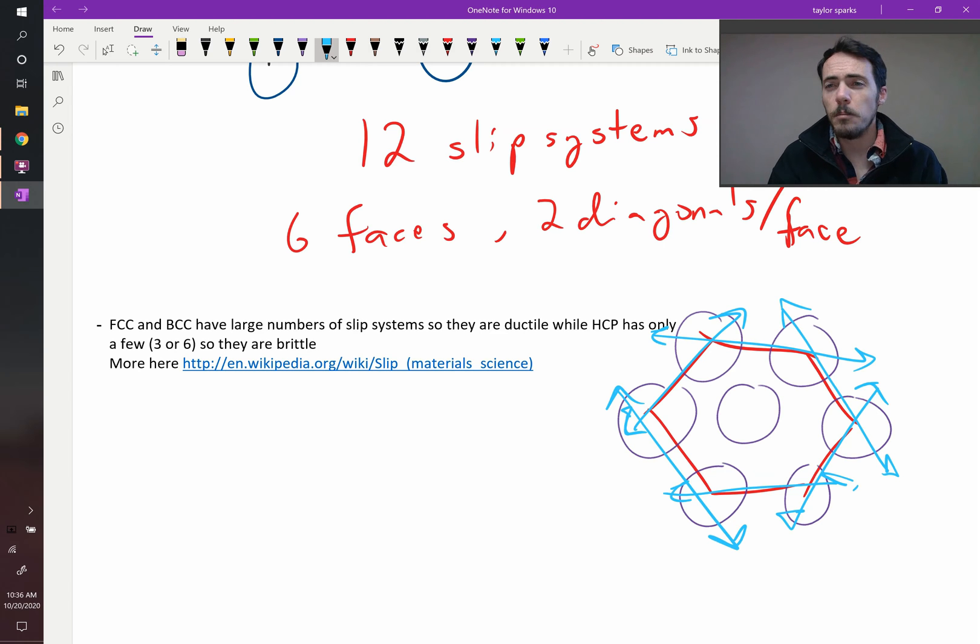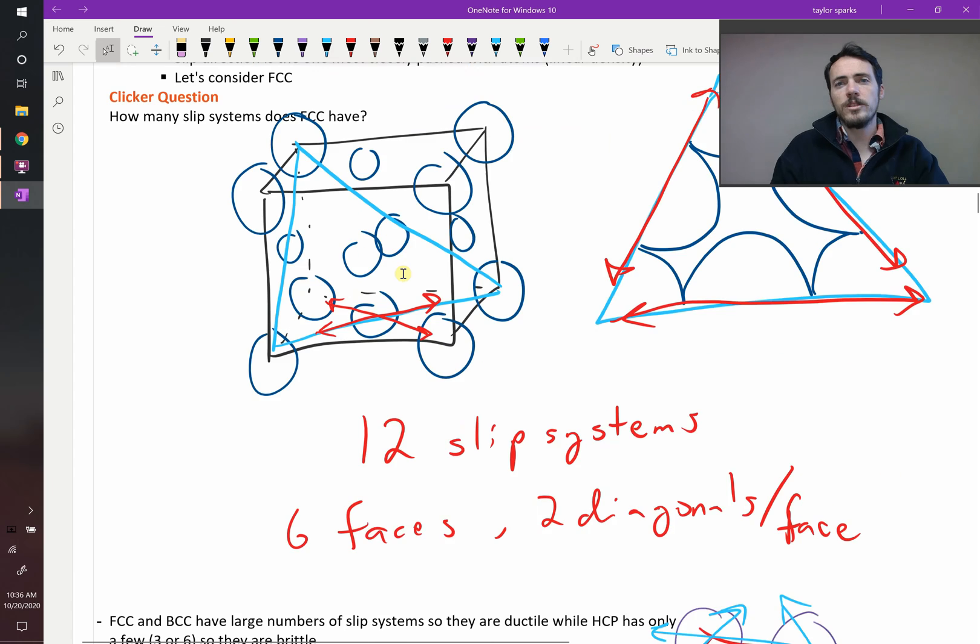HCP metals are much more brittle than FCC or BCC crystals because it has fewer slip systems. So when you go to strain this thing, it's just fewer combinations of the ways the atoms can move in order to make it actually slide past one another. And therefore, they end up being more brittle. Now, what do we mean slide past each other?